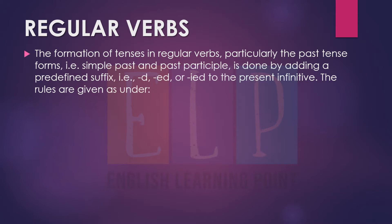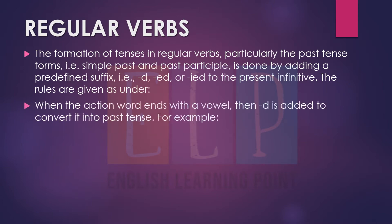Let's move to regular verbs. The formation of tenses in regular verbs — particularly the past tense forms, simple past and past participle — is done by adding a predefined suffix: D, ED, or IED. Regular verbs in their simple base form follow predictable patterns.